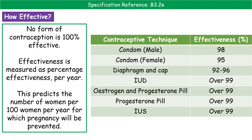One thing to watch out for in exam questions about contraceptives is the way they phrase it. If the heading of your table column is 'effectiveness', that tells you how good that particular contraceptive technique is at stopping you getting pregnant. So if the effectiveness shown as a percentage is 98%, that means for every 100 people using the male condom, only two would end up with a pregnancy. So if it says effectiveness, the higher the number, the better.